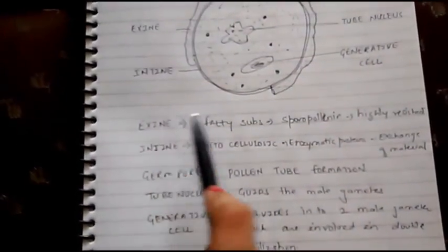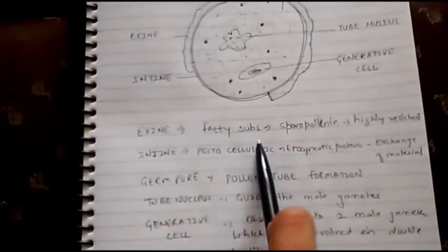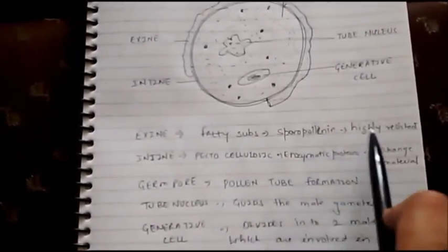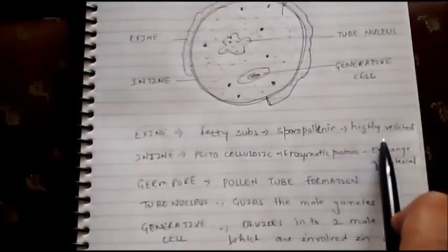The outermost layer exine is made up of fatty acid known as sporopollenin which is highly resistant and is protective in nature.